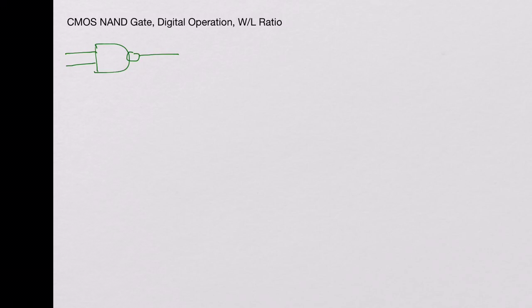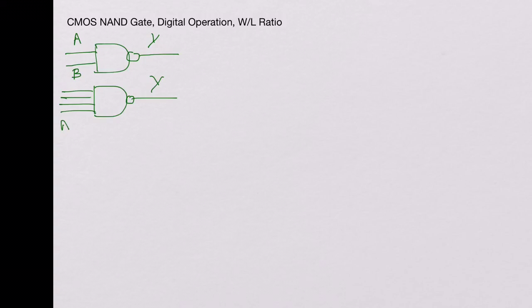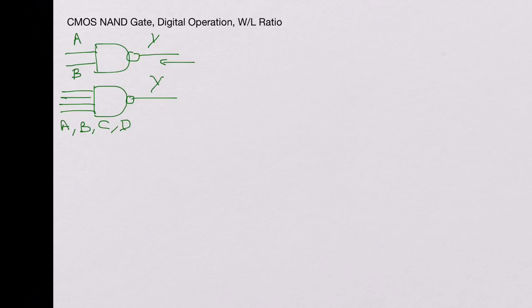Symbolically, the CMOS NAND gate is represented with two or more inputs and an output. Say I call it Y, with inputs A and B. You could also have a four-input NAND gate with inputs A, B, C, and D. Now let's consider the two-input NAND gate.